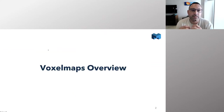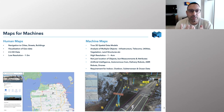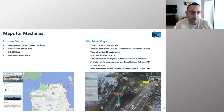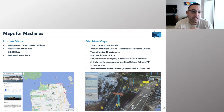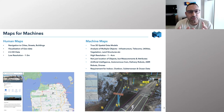Everything we do at Voxel is around this concept of maps for machines. I want to explain the difference between human maps and machine maps. Human maps — we're all pretty familiar with these — the maps we have on our phones, in our cars, on our computers. They're really around a use case of navigating people to addresses, whether that's a city, a street, or a building, or for visualizing data, creating some kind of geodata layers. The majority of the data is really 2D. There are 3D elements, but the accuracy of the data is relatively low — we're talking about one to three meters in terms of accuracy.